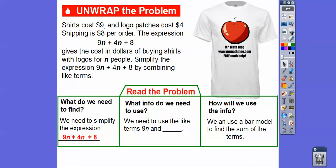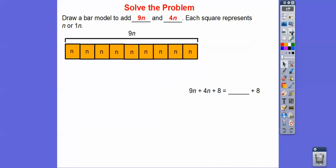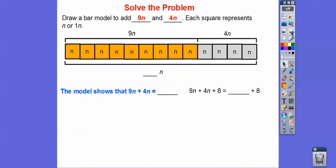The information we're going to use is that 9n and 4n are like terms. We'll use a bar model to find the sum of these like terms. We draw a bar model to add the 9n and the 4n, where each square represents n, or 1n. Remember, 1n is the same as n. Here are 9 squares for the 9n shirts, and here are 4 squares for the 4n logos.